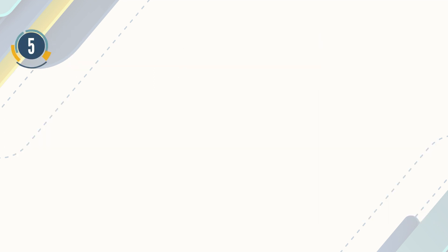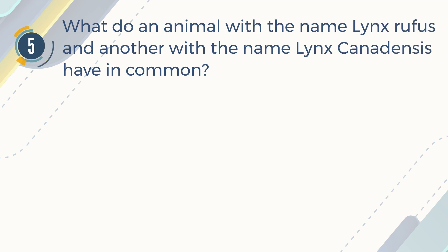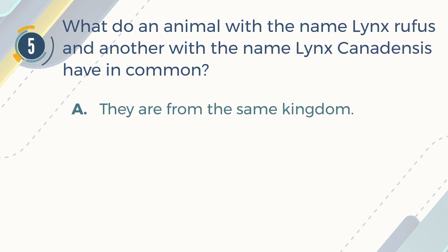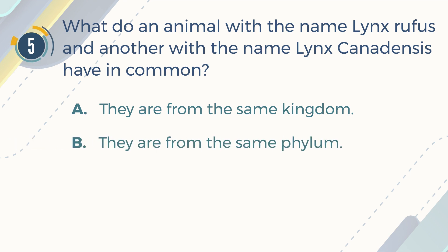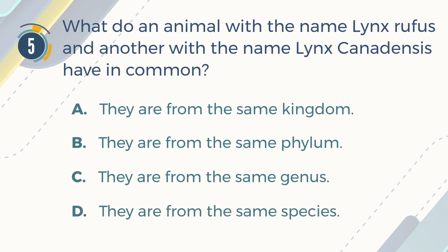Number 5. What do an animal with the name Lynx rufus and another with the name Lynx canadensis have in common? A. They are from the same kingdom. B. They are from the same phylum. C. They are from the same genus. D. They are from the same species.